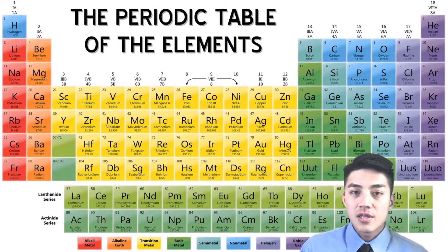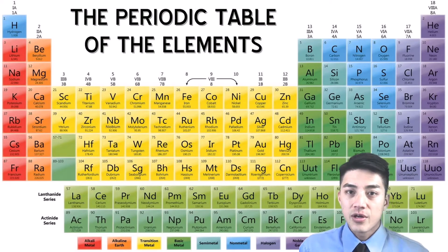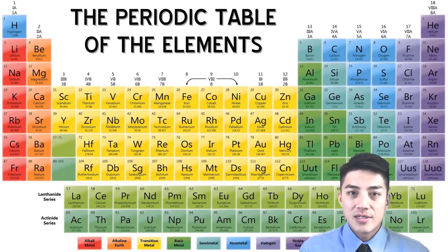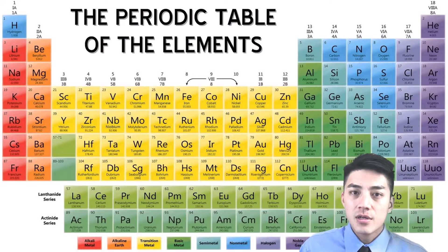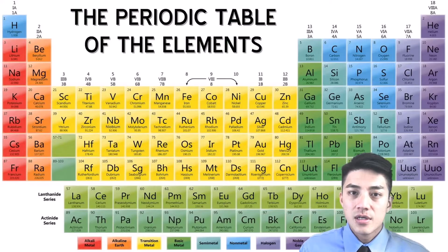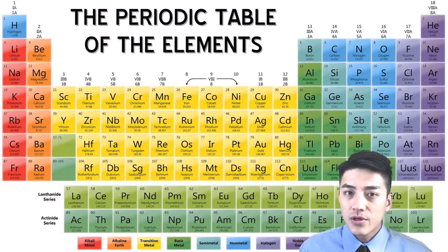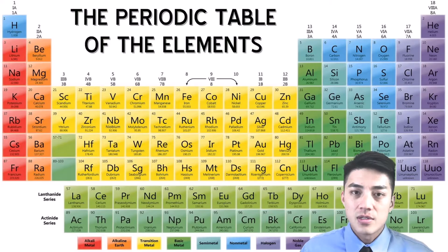Before you really start to understand the ins and outs of the elements on the periodic table — things like atomic mass and atomic weight, what family these elements are in, whether or not they tend to gain or lose electrons — the most important thing to realize first is you have to get familiar with some of the names and symbols.